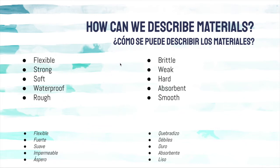We can also use the opposite of these words, like brittle, which means it breaks easily, weak, hard, absorbent, meaning it soaks up water, or smooth.